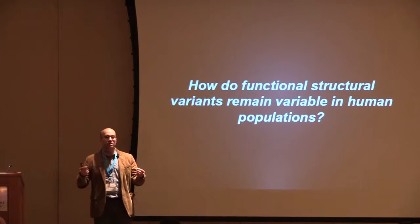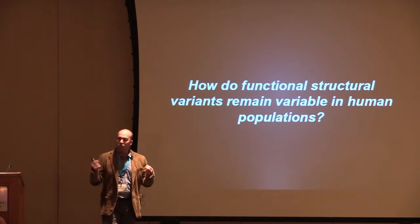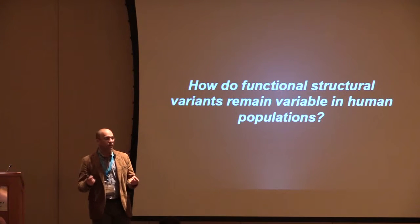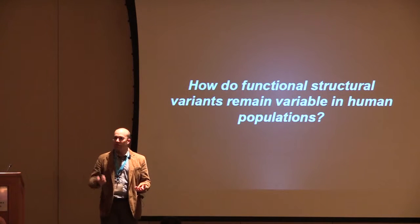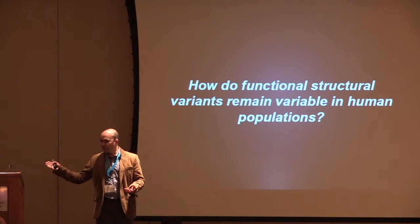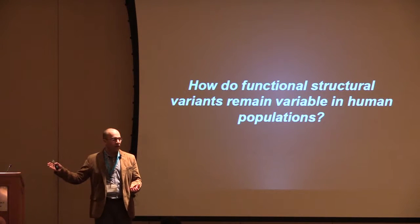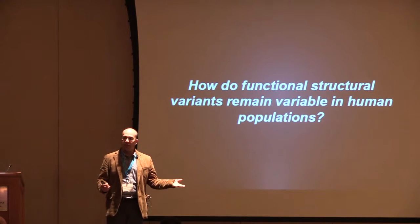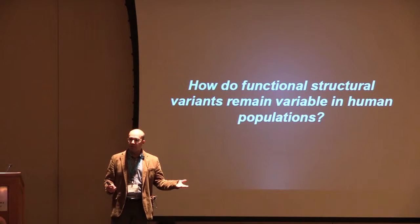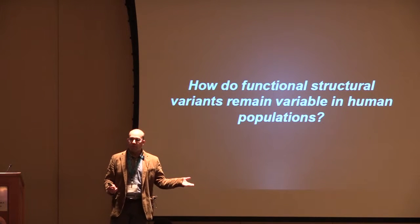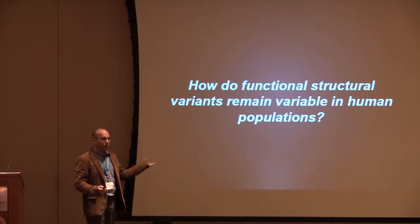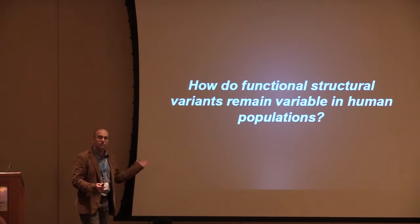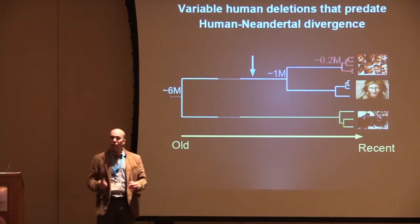The question becomes: why do these very large structural variants still linger in the population? If they were truly beneficial, they should be fixed through classical selective sweeps. If detrimental, they should be eliminated by purifying selection. So why are they still there?